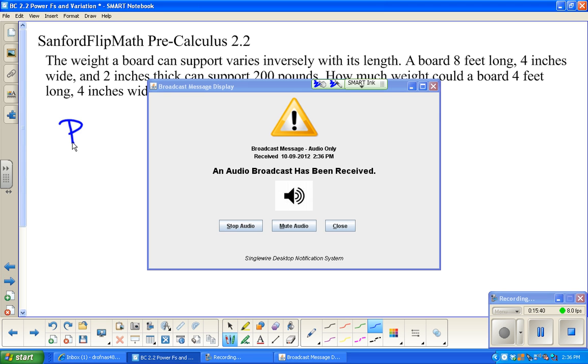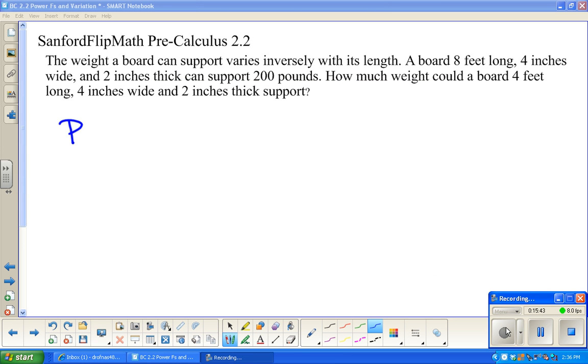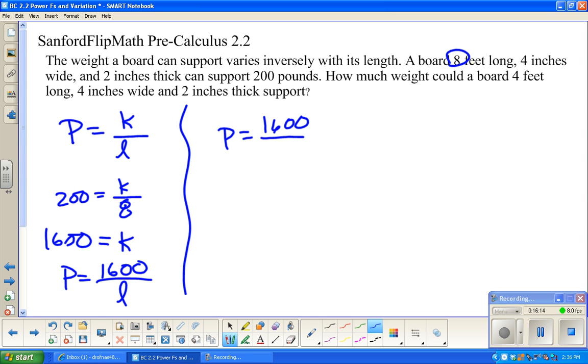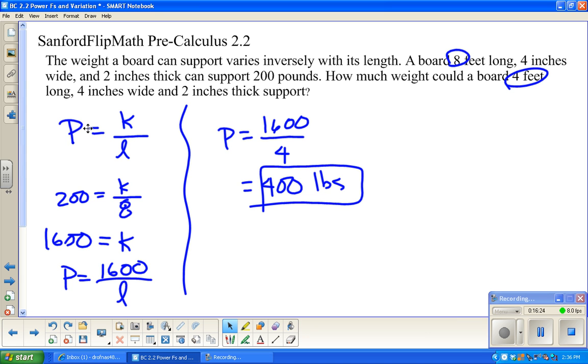The weight a board can support varies inversely with its length. So, I'm going to substitute in 200 equals k over its length. And that length was eight feet. So, k equals 8 times 200, that's 1,600. So, now I can build an equation, p equals 1,600 over length. And the length now is 4 feet long. So, now it's 400 pounds. So, you can think about what just happened when you divided in half. It actually doubled the weight.